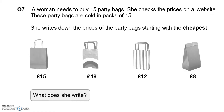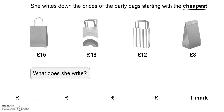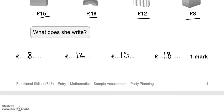A woman needs to buy 15 party bags. She checks the prices on a website. These party bags are sold in packs of 15. She writes down the prices starting with the cheapest. The cheapest is £8, then £12, £15, £18 — they are getting more and more expensive.